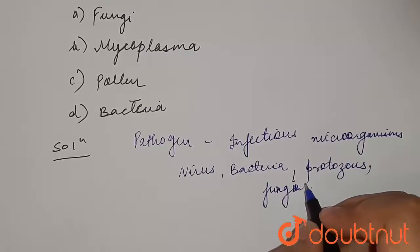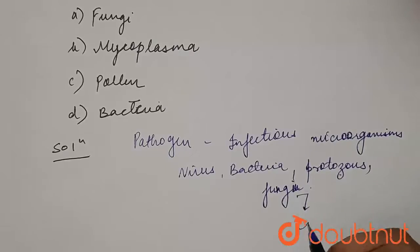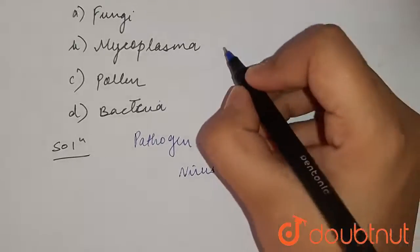So students, these are the pathogens. Fungi is eukaryotic and causes common diseases in crops, plants, and also causes diseases in animals and humans. Then we have mycoplasma.